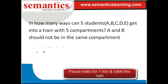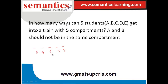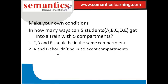Now the variation: A and B should NOT be in the same compartment. Put five dashes. The first student A can go in five ways. The second student B can't go into the same compartment as A, so B has four ways. Students C, D, and E can go into any compartment, so that's five, five, five ways for them respectively.